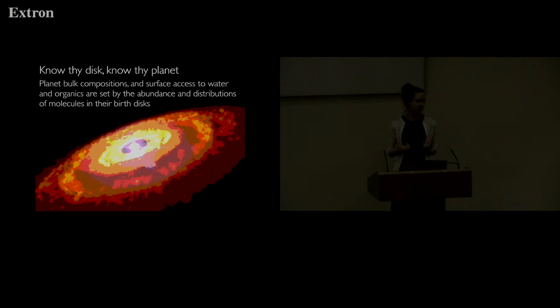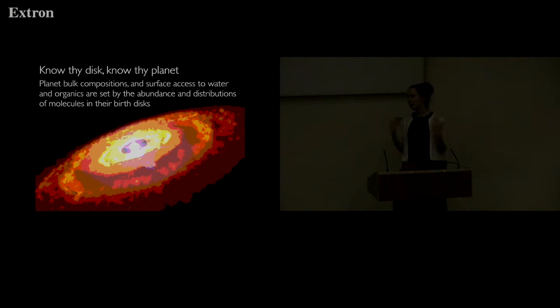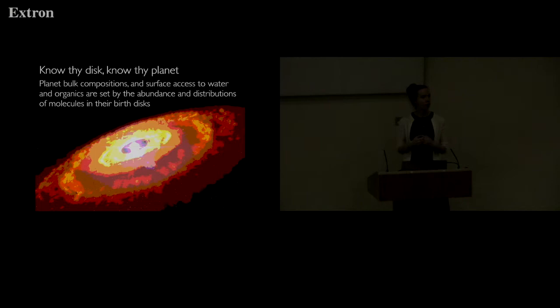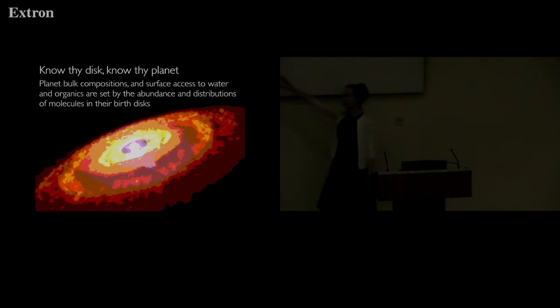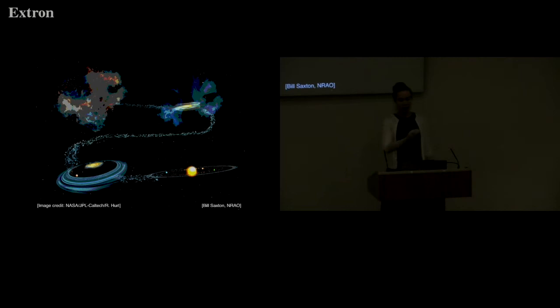The fundamental hypothesis of this lecture is that to understand planets and the outcome of planet formation, we need to understand the environment within which they form. Planets form in disks of gas and dust around young stars. My claim, which I will try to defend throughout this lecture, is that the planet's bulk compositions — whether you get a gas giant or an ice giant — and also what the organic inventory is and whether a planet has access to water, are all questions related to the chemistry in these birth disks of planets.